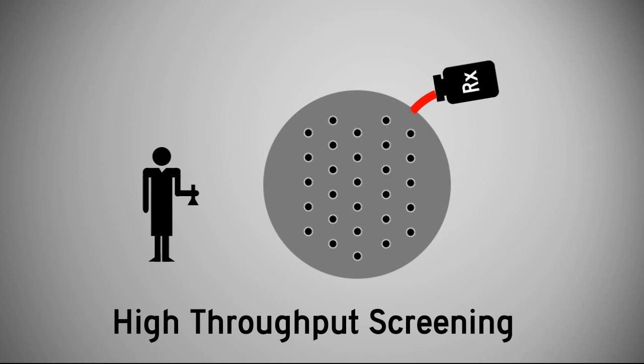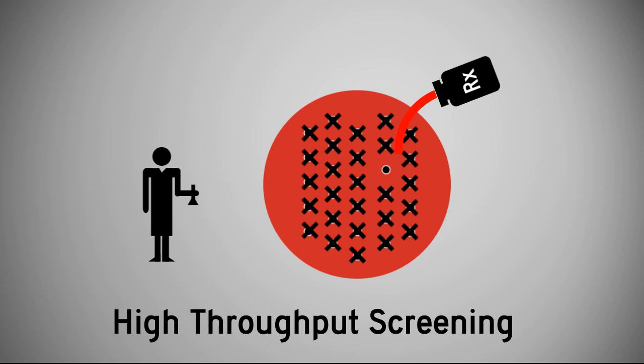Because this procedure is done in parallel on a large number of colonies at once, biologists can find the proverbial needle in a haystack without necessarily understanding what features of the bacteria produce the resistance. This is called screening. The biologists can then study the surviving bacteria to figure out what makes them tick.